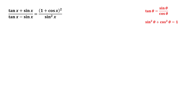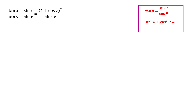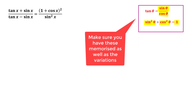In this video we're going to look at some more advanced examples on proving trigonometric identities. To recap from the last video, the main identities for grade 11 are: tan theta equals sin theta over cos theta, and sin squared theta plus cos squared theta equals one. We looked at this second identity quite a bit more because there were so many different variations of it.